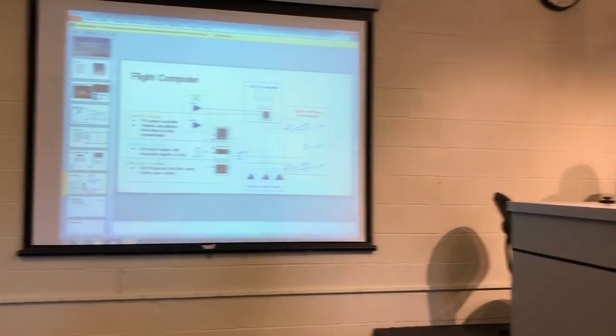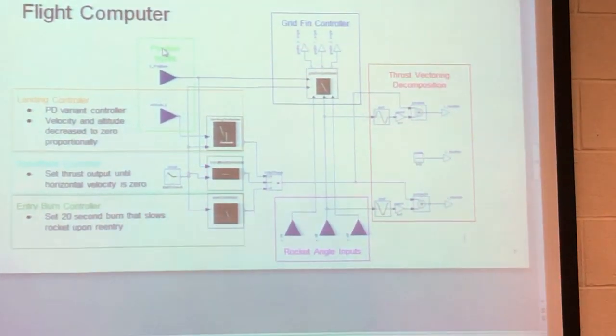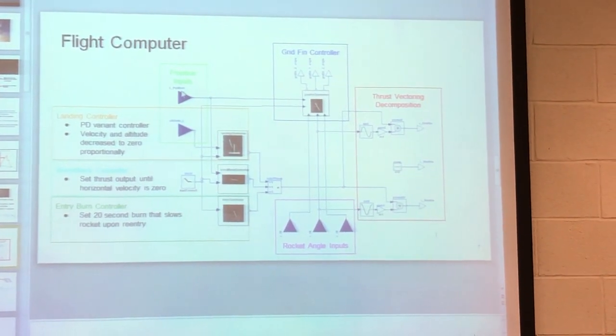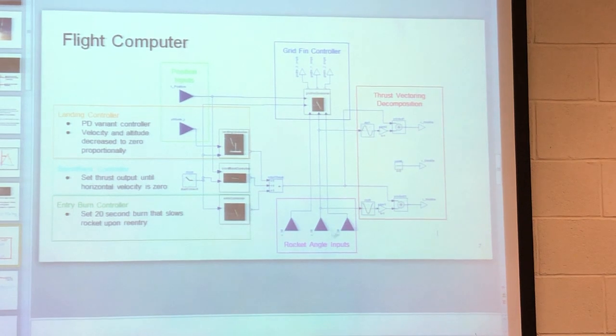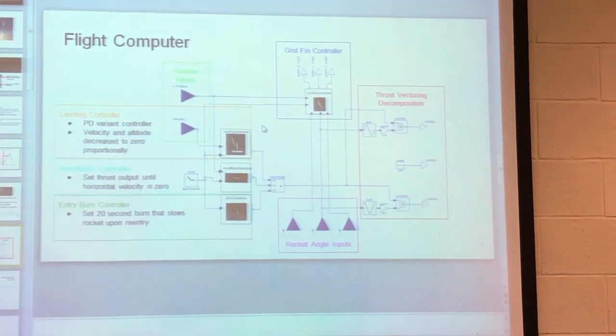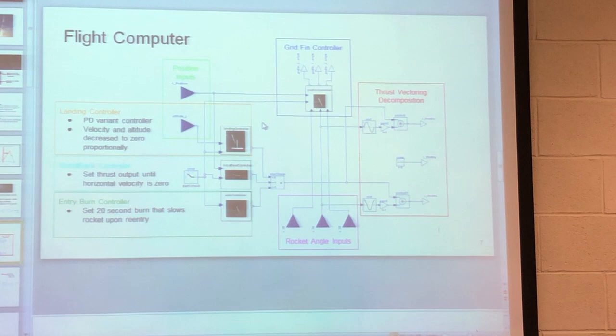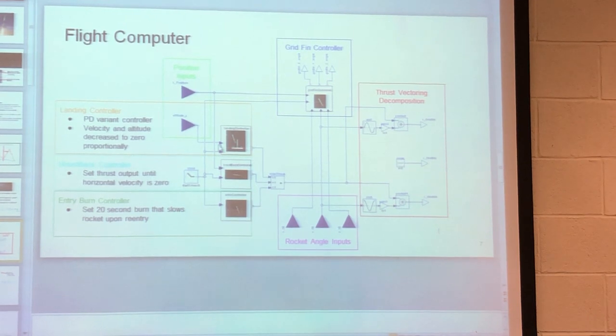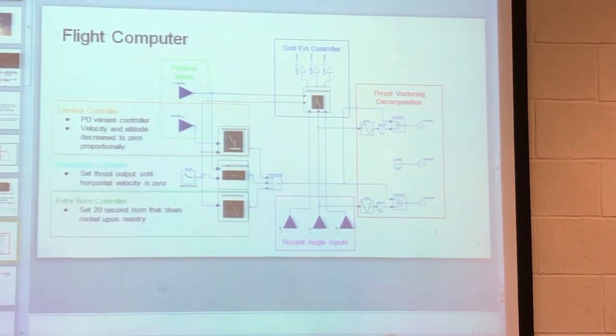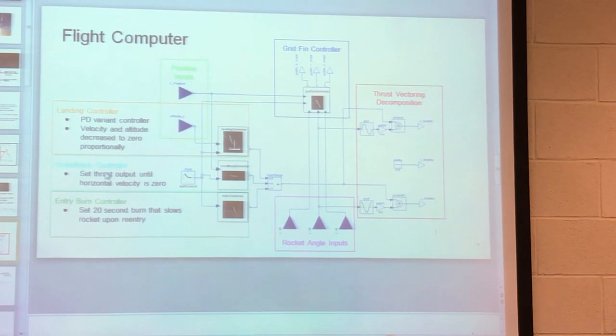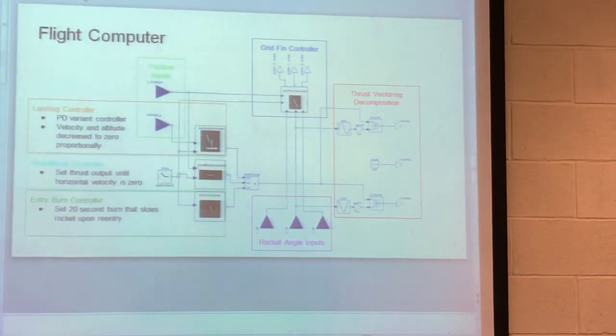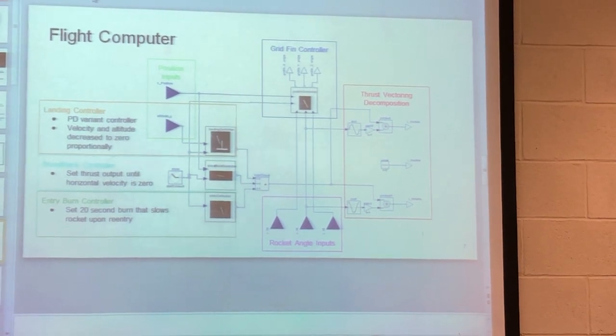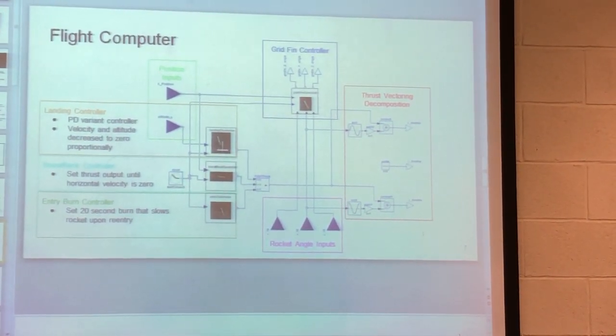Moving on to the flight computer, this is like a big part of it. Basically I have all of my inputs: the position, the altitude, the ground position, and then all the rocket angle inputs. I basically have a controller, I basically broke it down into a controller for each stage of the flight. For example these three controllers happen in sequence, with the boost back controller taking over first. This has a set thrust output, and it basically stops as soon as that horizontal velocity goes to zero. And that basically ends.